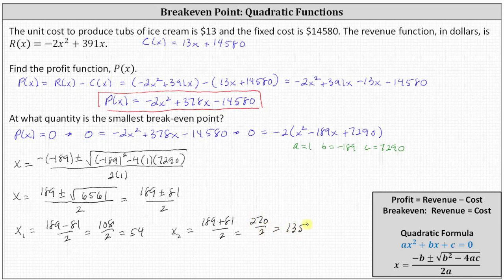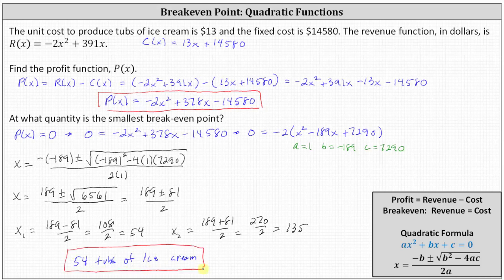Because we're looking for at what quantity is the smallest break-even point, our answer is 54 tubs of ice cream. This is the smallest quantity at which the company breaks even, meaning the revenue is equal to the cost or the profit is equal to zero.